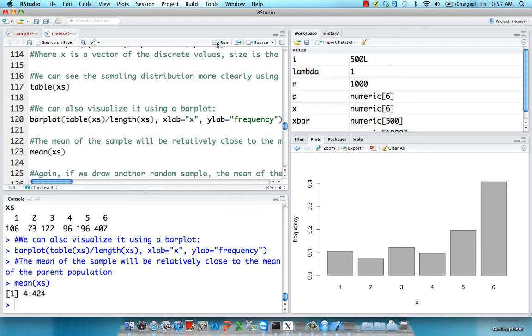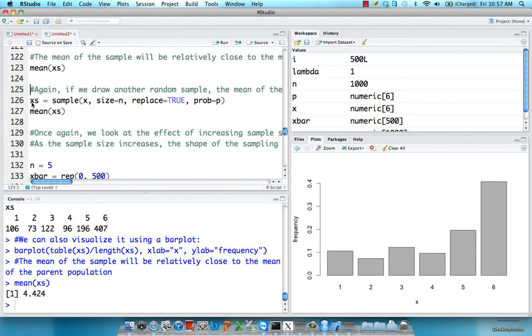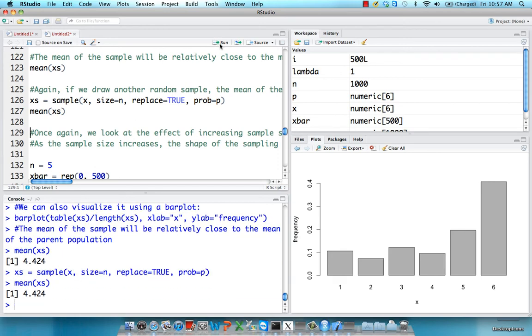And the mean of this is relatively close to the population mean of 4.4. And we can see if we randomly sample another, say, 1,000 subjects and take the mean, it's also pretty much identical.